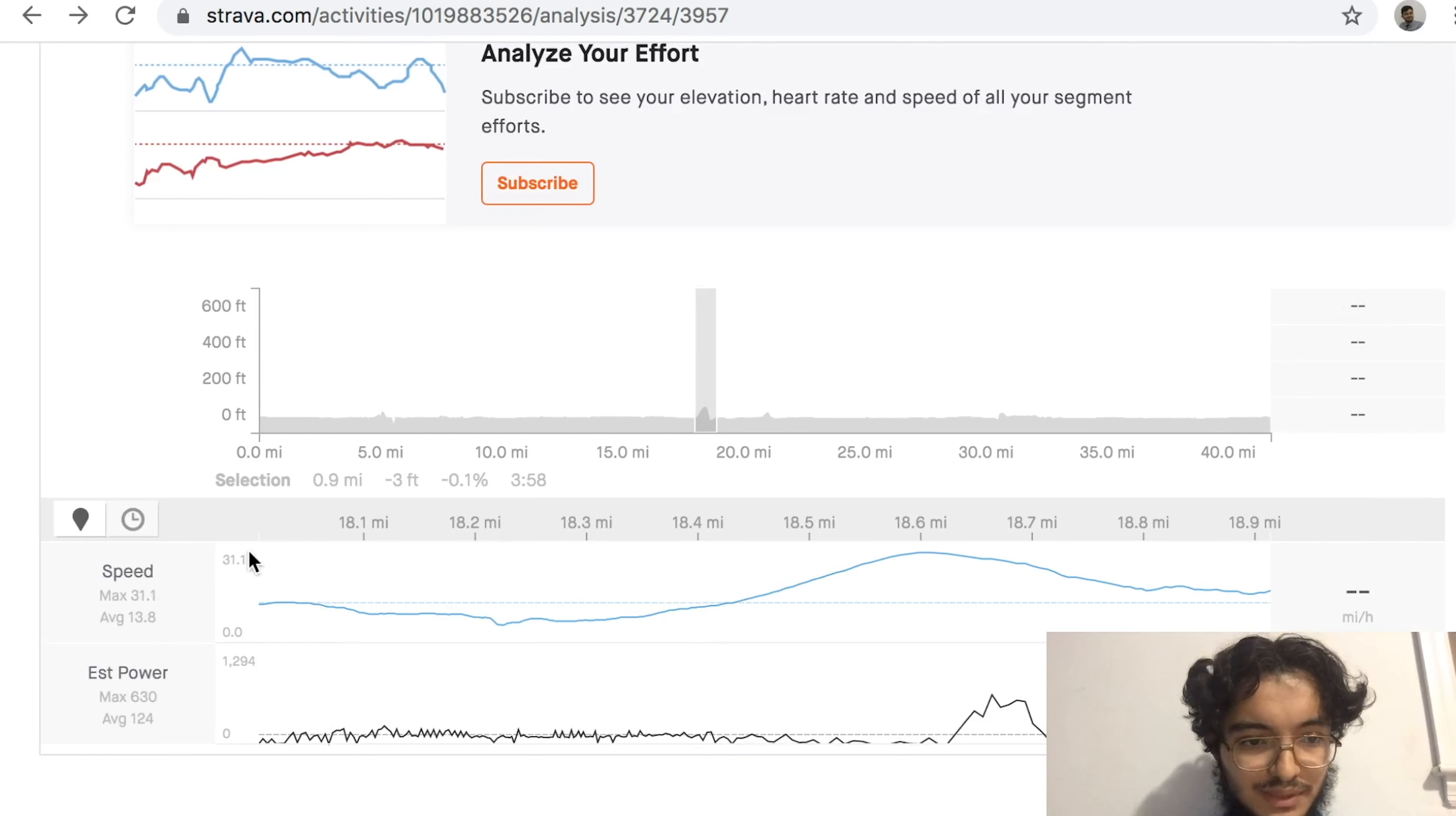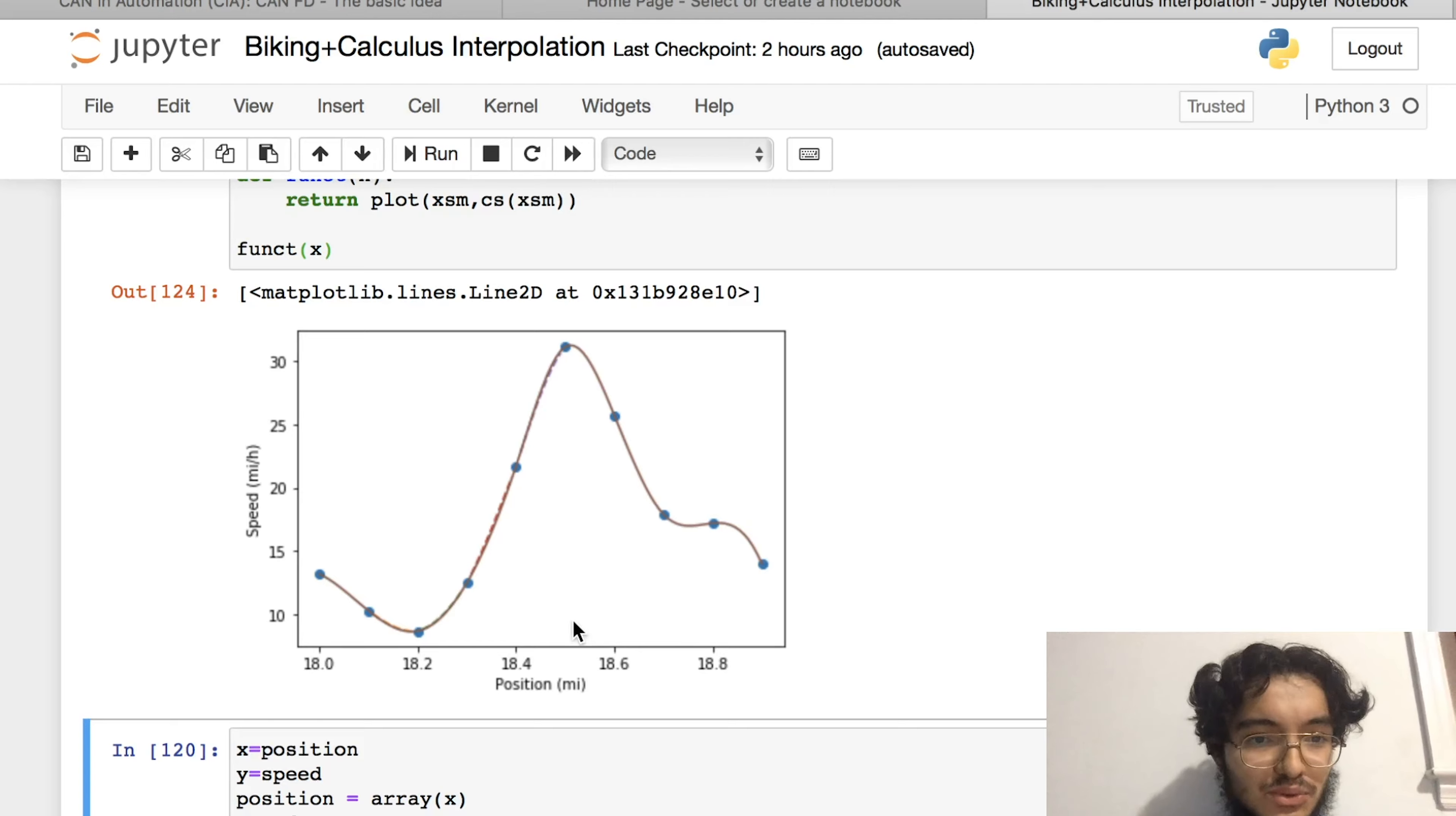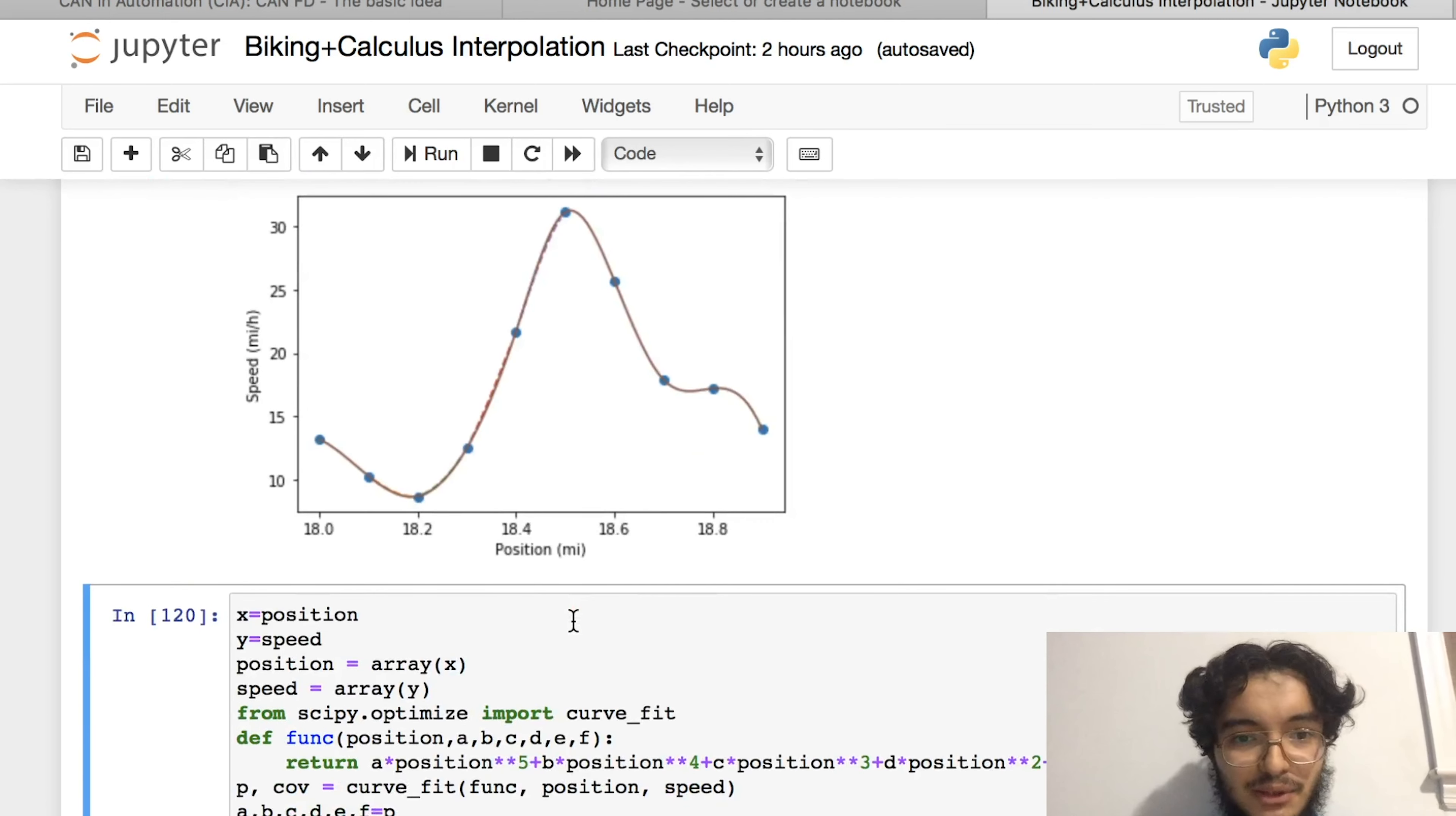So over here we have an example of a speed over position graph. And this can, of course, be obtained from a GPX file. And if you're curious, I actually did some analysis. If you have a Jupyter notebook, which is a package from Anaconda Python, what you could do is plot all this data or maybe just a few points. I just took a few points from the GPX file and plotted some of those points over here.